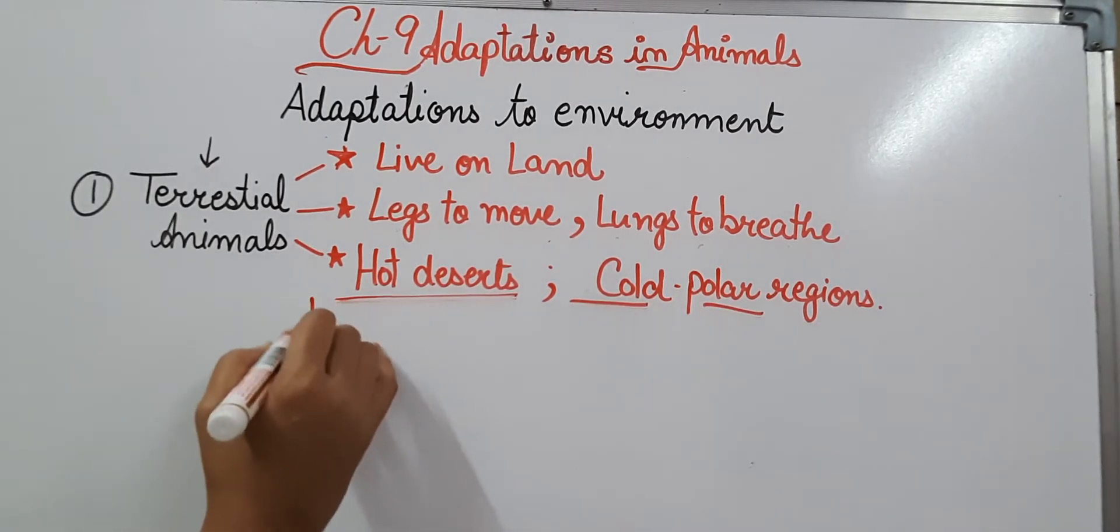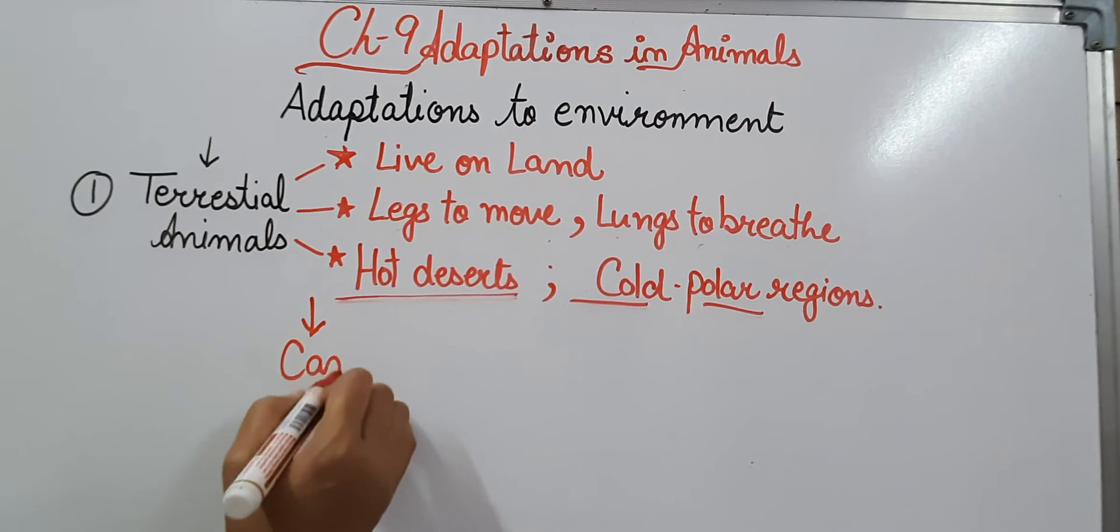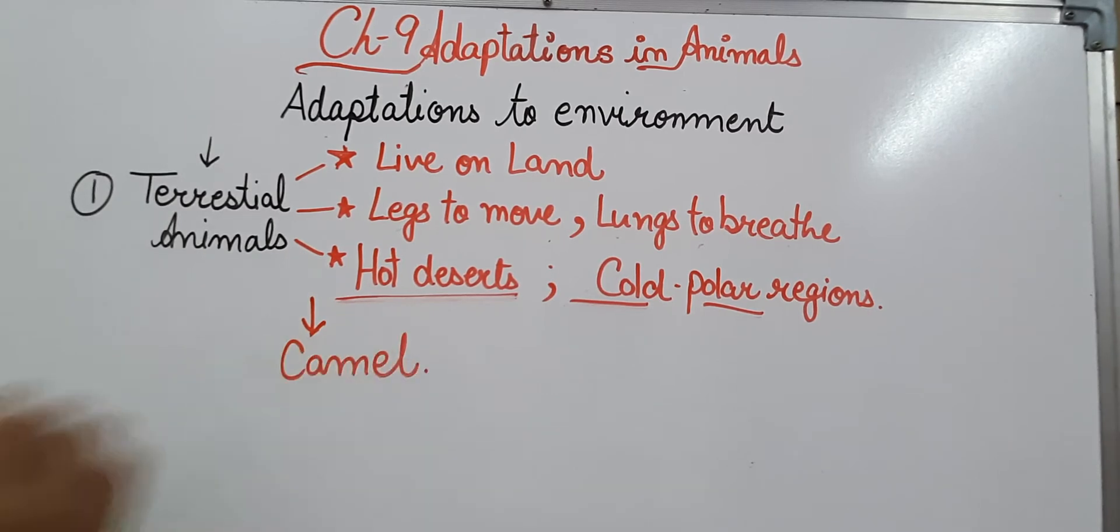For example, camel is found in hot desert and it can survive in that desert very well. Now camel has some special features which help it to survive in the harsh climate of hot desert. What are the main features of camel that help it to survive in the hot desert? The main features are: